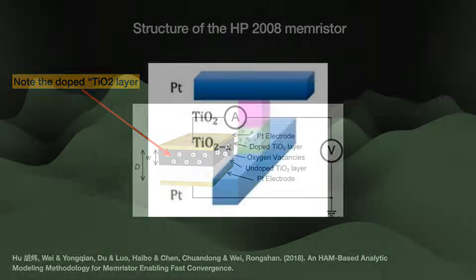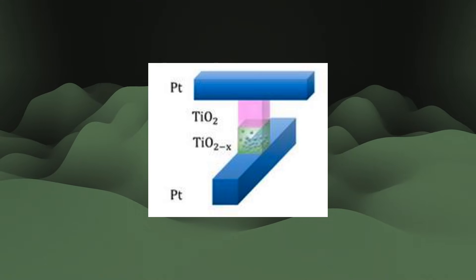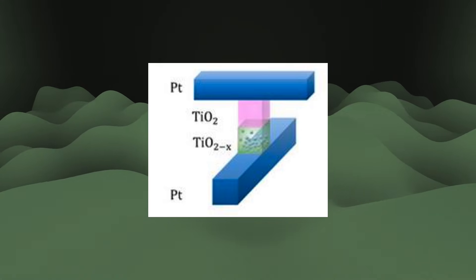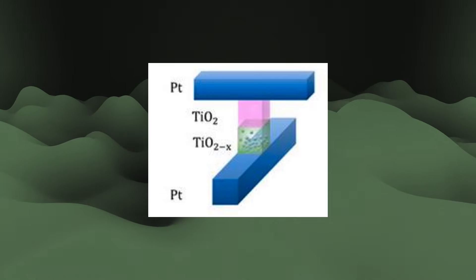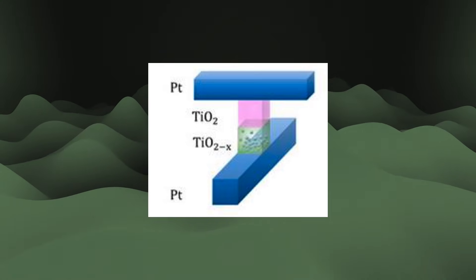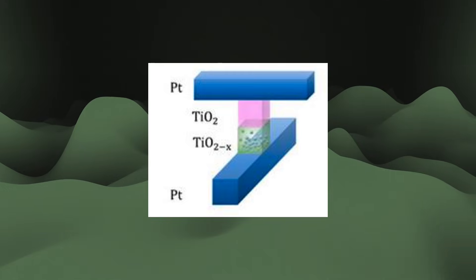When you apply voltage, then a current starts to pass through this titanium dioxide. But in doing so, this current must pass through two regions: one that is undoped and is a good resistor, as well as a doped layer with less resistance.